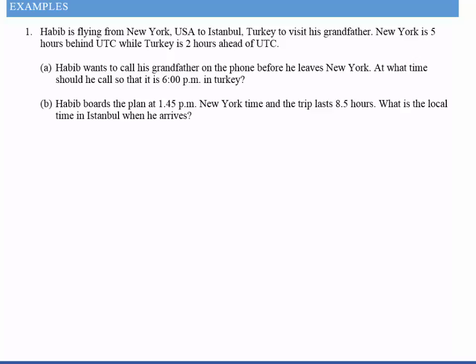Habib is flying from New York, USA to Istanbul, Turkey to visit his grandfather. New York is five hours behind Universal Coordinator Time, which is Greenwich Meridian. New York is over here and it's five hours behind, and Turkey is two hours ahead. So the first thing I need is the time difference — five hours behind and two hours ahead, so altogether the time difference must be seven hours.